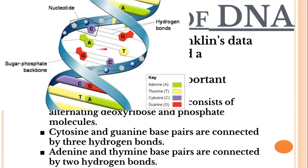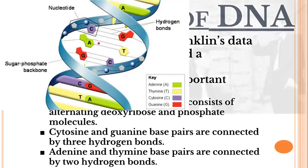Guanine also has that extra ring, making it a purine as well. One way to remember this: 'pyrimidine' is the bigger word but refers to the smaller molecule. The pyrimidines are thymine and cytosine; the purines — the smaller word — are the larger molecules: adenine and guanine. Another mnemonic: 'pyrimidine' has a Y in it, and so do thymine and cytosine. You always see one pyrimidine paired with one purine.